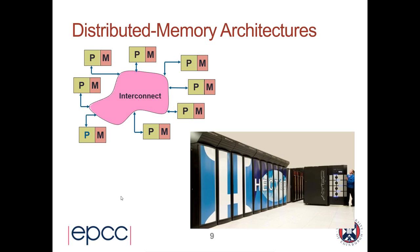We've talked in the abstract about how message passing insulates you from the physical communications network, but it's important to realize that this model maps very well onto real supercomputer parallel computer hardware. That's one of the reasons why message passing has been so successful over the past three decades. Here's a picture of a machine called HECTOR, which was the national supercomputer in the UK until the early 2010s, located at EPCC.